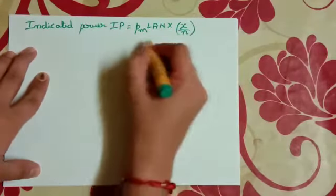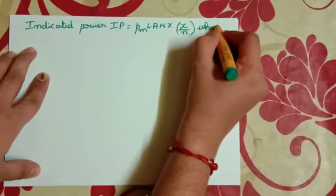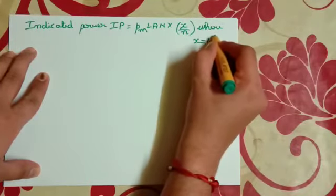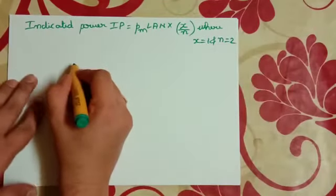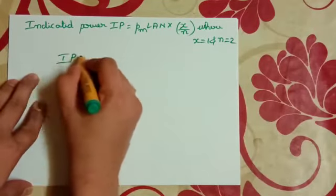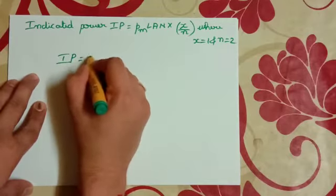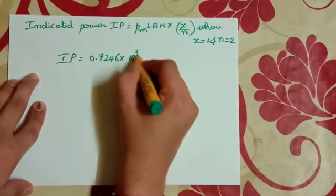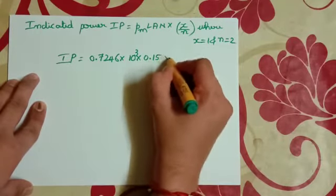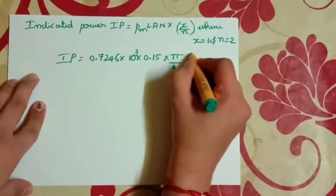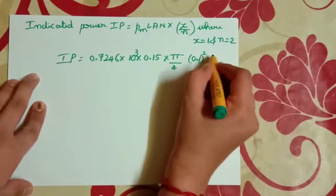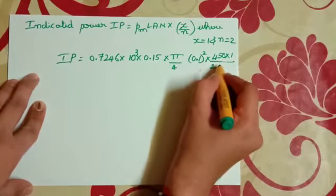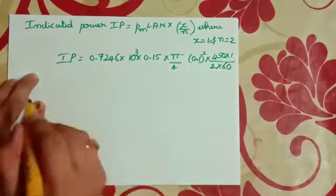Where X is equal to 1 and N is equal to 2, then IP is equal to 0.7246 into 10 raised to 3 into 0.15 into π by 4, 0.1 square, into 450 into 1 divided by 2 into 60. Then IP is equal to 3.2 kilowatt.